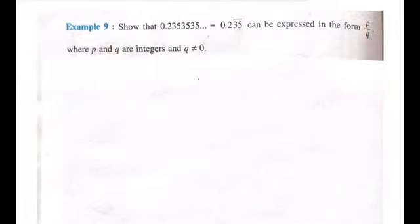Hello students, in this video we are going to see how to solve example 9 of NCRT book. Here you have been given 0.235353 and you will have to write it in P by Q form.